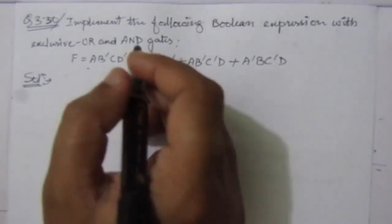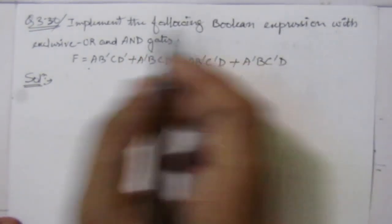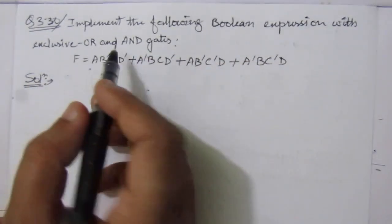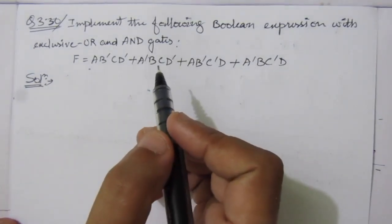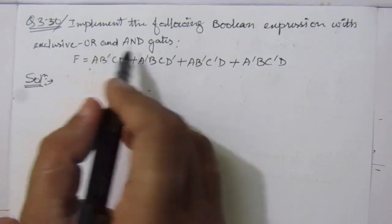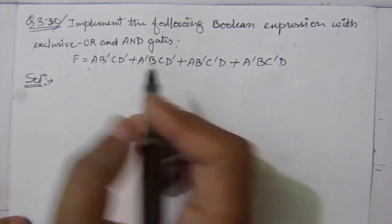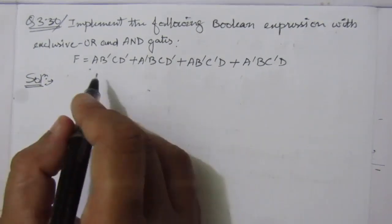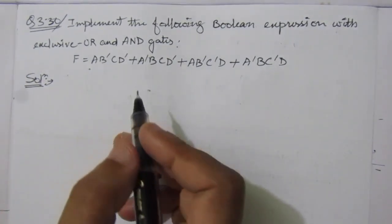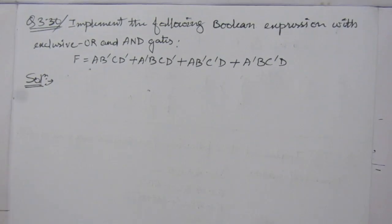The problem is: implement the following Boolean expression with exclusive-OR and AND gates. That means we can use two types of gates - exclusive-OR and AND gates. We are given this function capital F. First of all, we have to express this function in terms of XOR and AND operations.